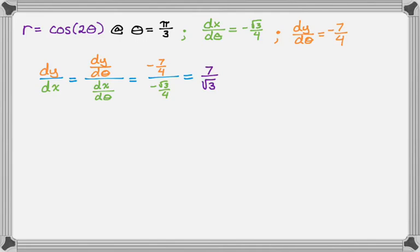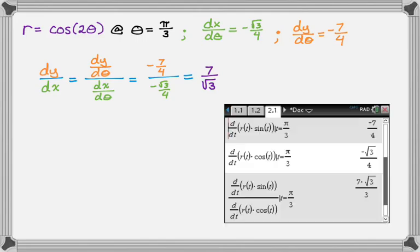I ran this through my calculator to verify, using t instead of theta for convenience. I found dy/dt and dx/dt separately, and also had the calculator compute it all in one shot. The calculator rationalizes automatically, but when doing it by hand I'd leave the answer as seven over radical three.